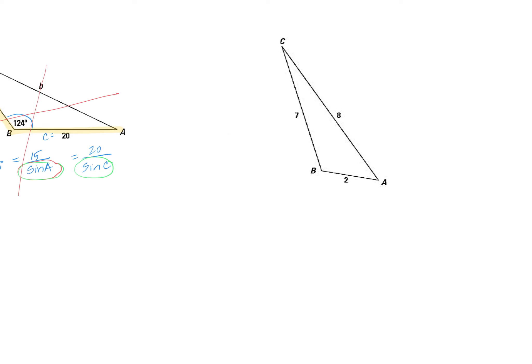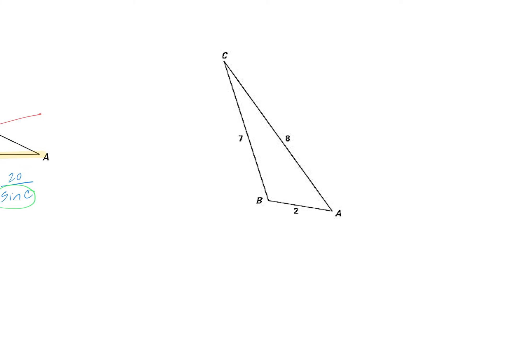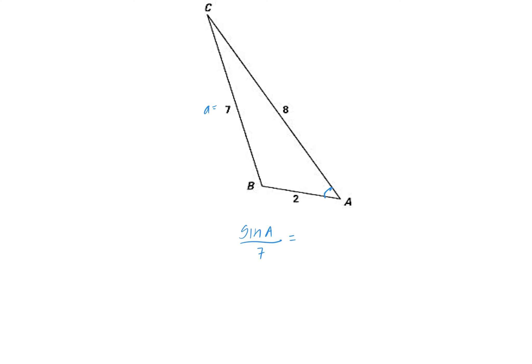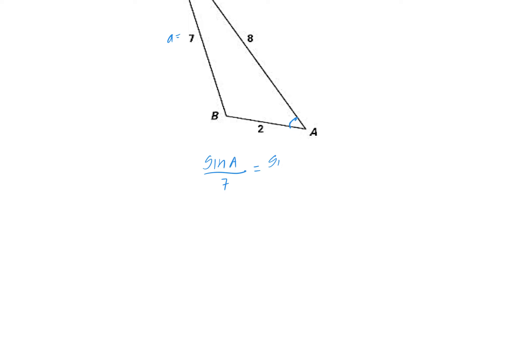The same problem arises with three sides and no angles (SSS). If I want to find angle A, I'd set up sine of A over 7 equal to sine of B over 8, but I don't know angle B either — two unknowns, one equation, can't solve. That's it for this section. In the next section, we'll look at these SAS and SSS cases using Law of Cosines.